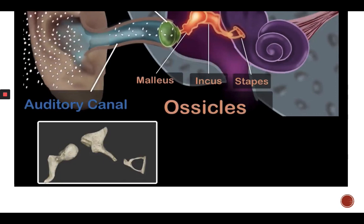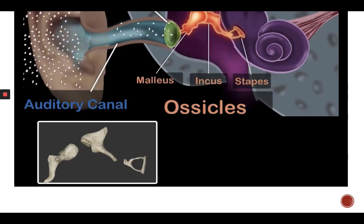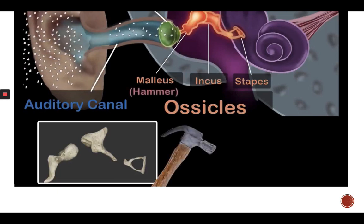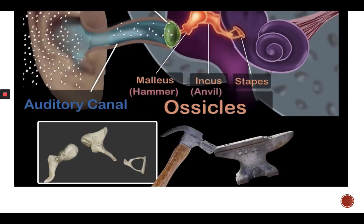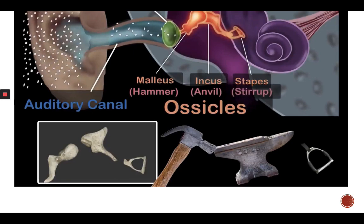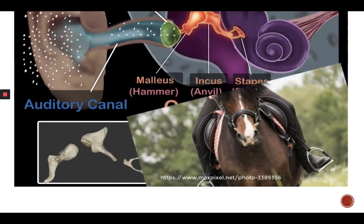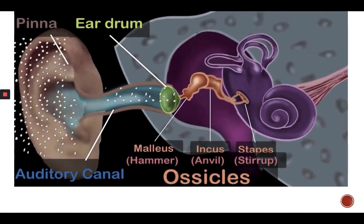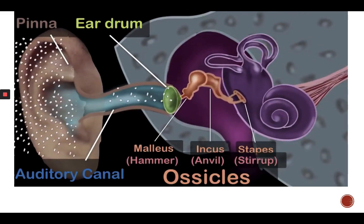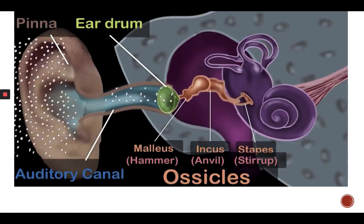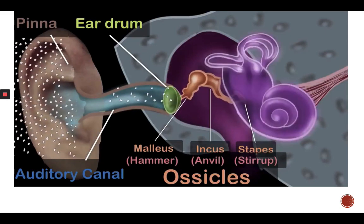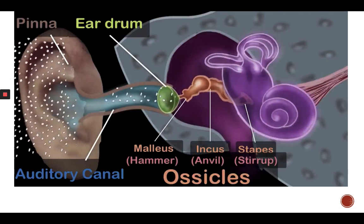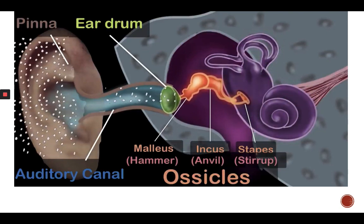Because of their shapes, they are also commonly called the hammer, the anvil, and the stirrup. As the eardrum vibrates, the ossicles also start vibrating, transferring vibrations from the eardrum to the inner ear. Their main job is to increase or amplify the pressure of the sound waves when they reach the inner ear.